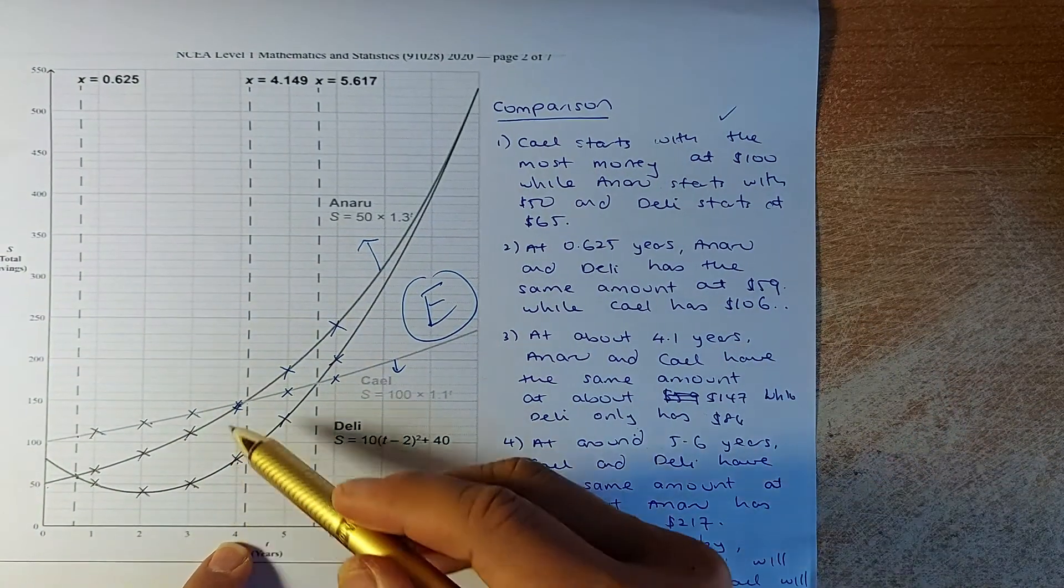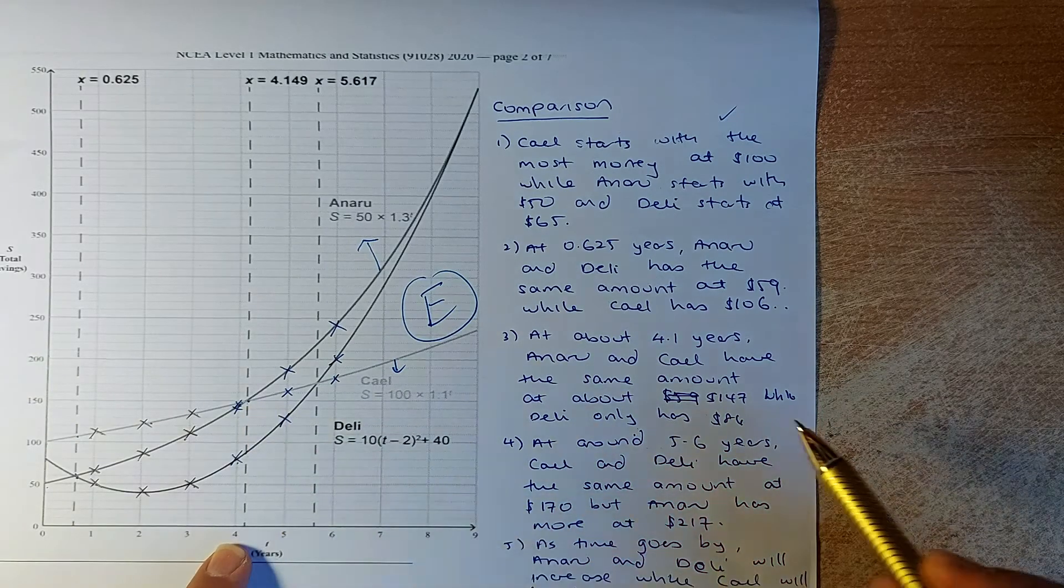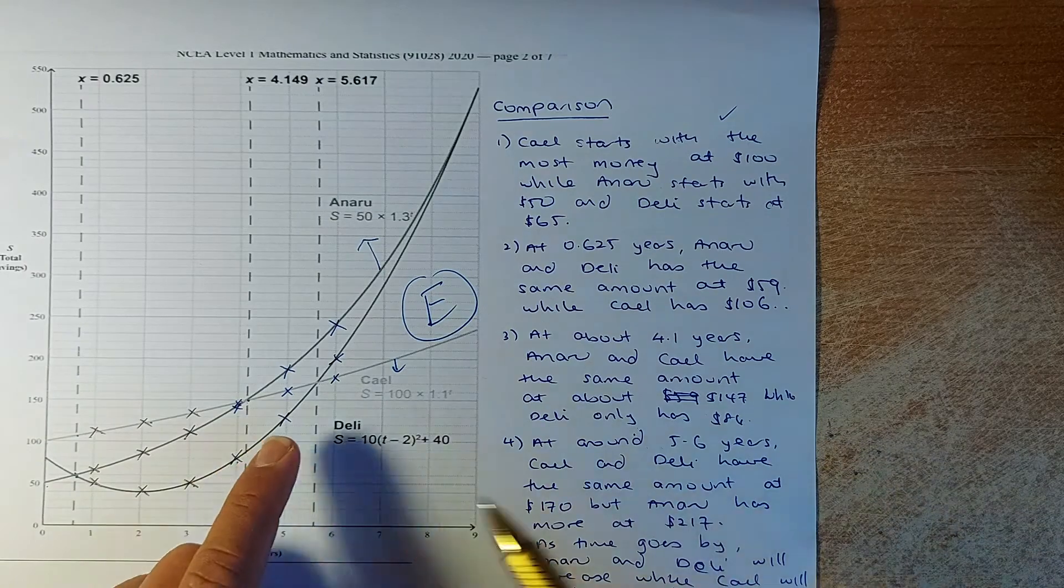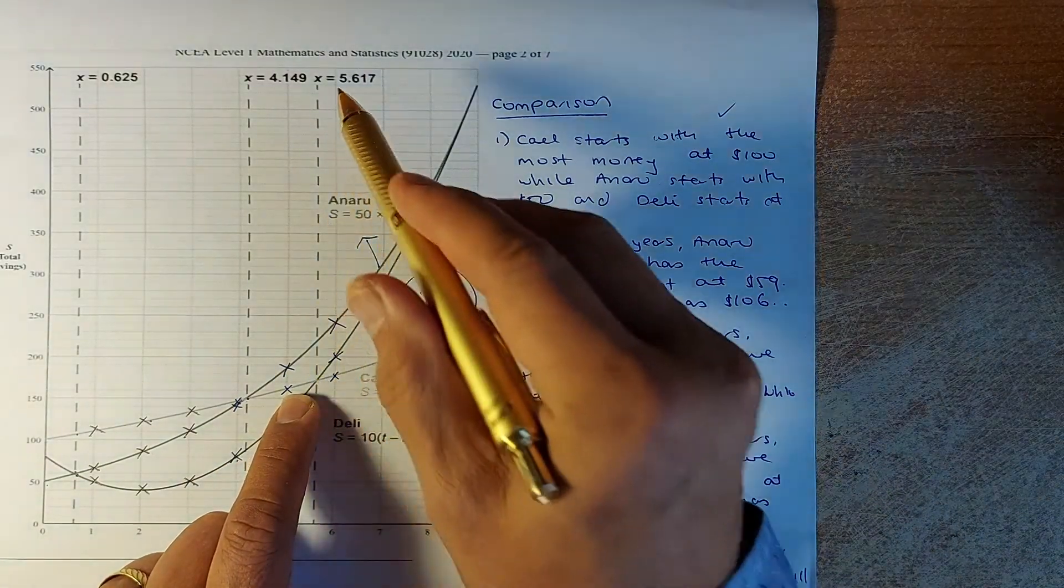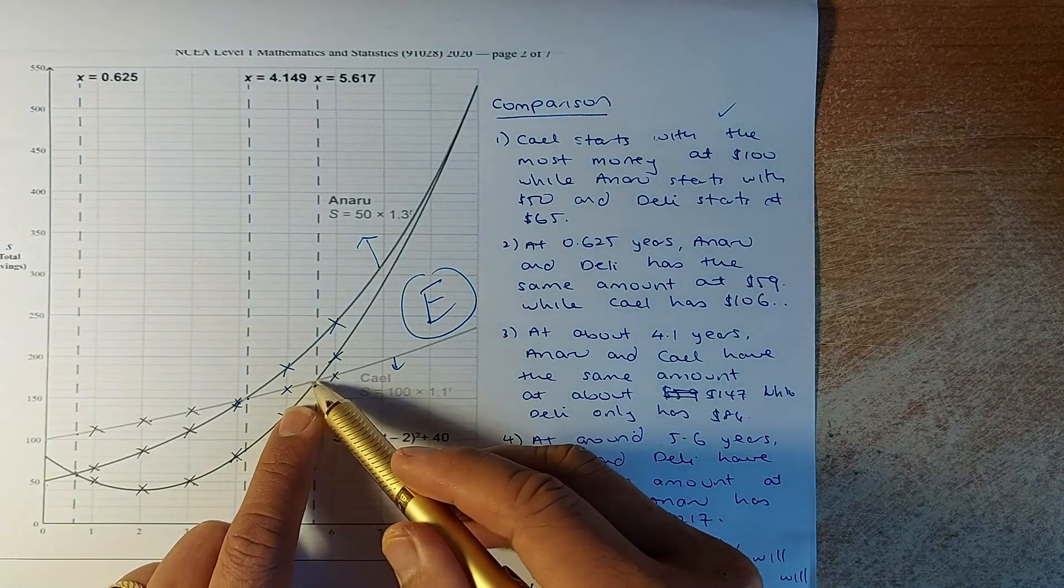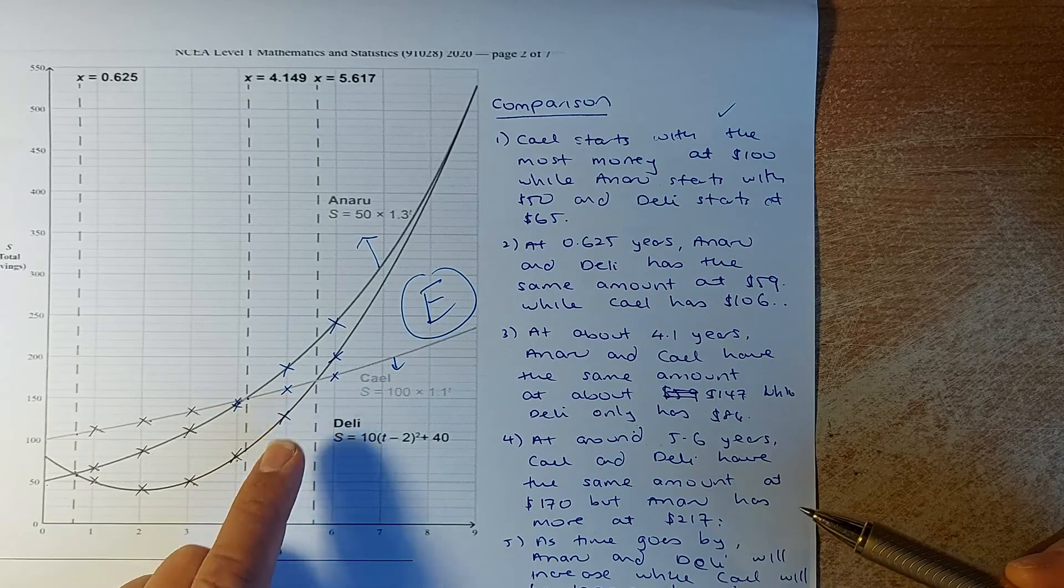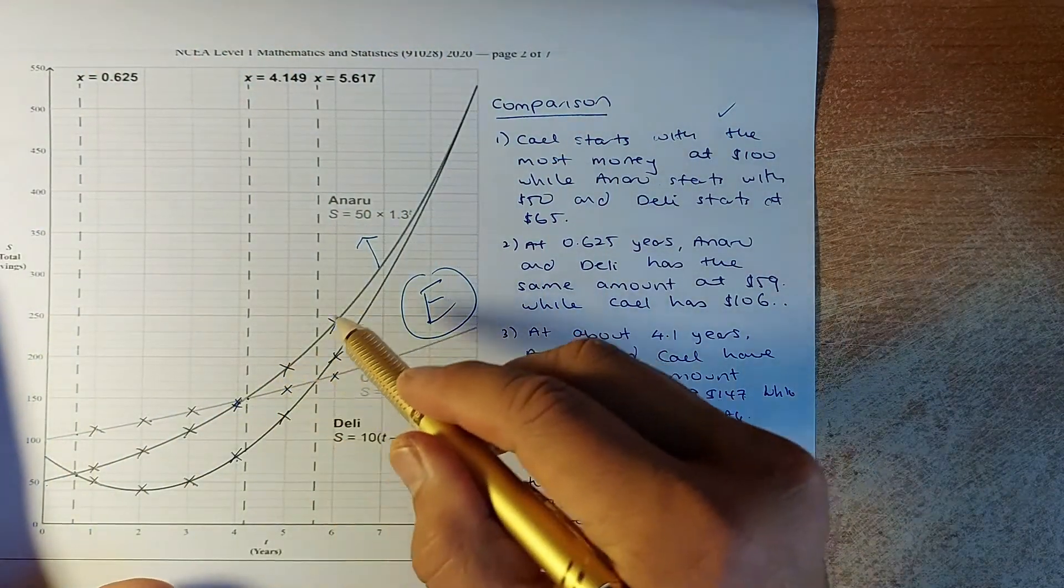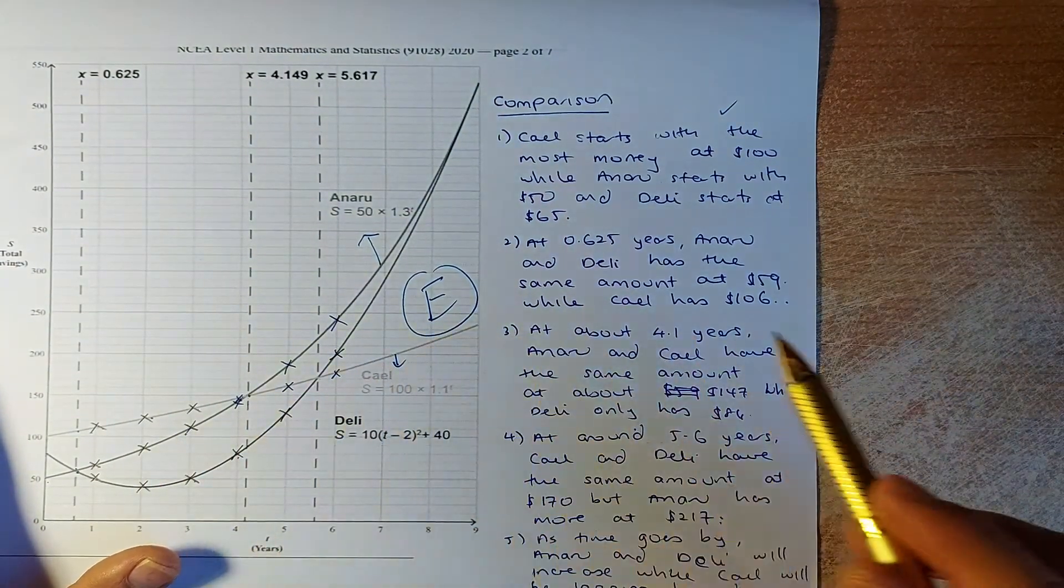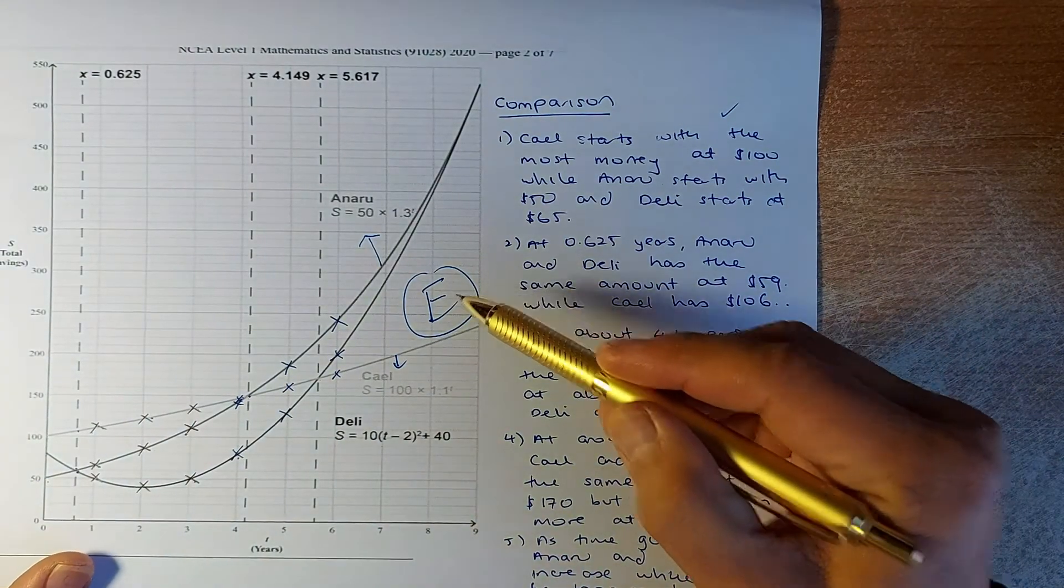Great. Now we look at 4.1 years. Again, this time Kale and Anaru are the same. Okay, in this case, Kale and Anaru have the same amount at 147 while Deli is slightly lower at 84. And again, the next point where they meet again is this point here. This point is going to be at 5.6 years. In this case, Kale and Deli have the same and they are at 170, while Anaru is way above. That is going to be at 217. Okay, so as the time goes by, over long period of time, you can see that Anaru and Deli is going to go up way up there, while Kale will remain here. So we can say that Kale will be lagging behind compared to Anaru and Deli.